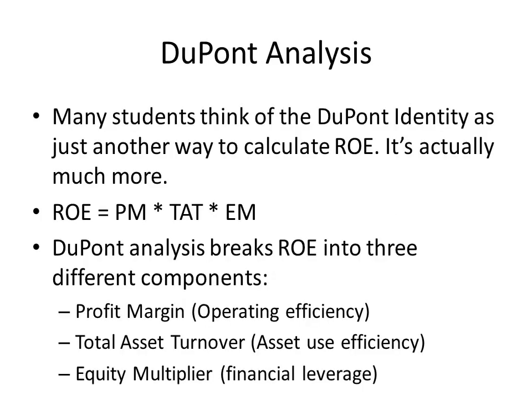Many students think of the DuPont identity as just another way to calculate ROE, but it's actually much more. It is profit margin times total asset turnover times the equity multiplier. What the DuPont analysis is really doing is breaking down return on equity into three different components: profit margin is a measure of operating efficiency, total asset turnover is a measure of asset use efficiency, and the equity multiplier is a measure of financial leverage.